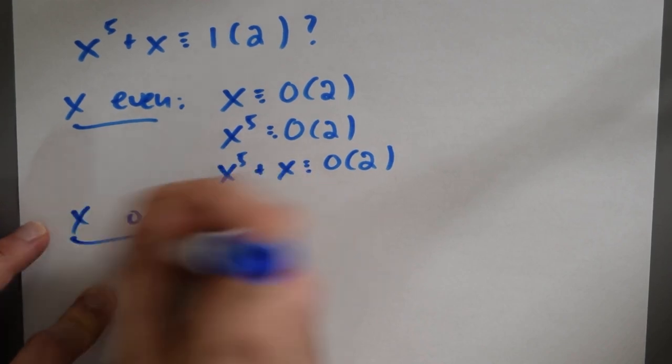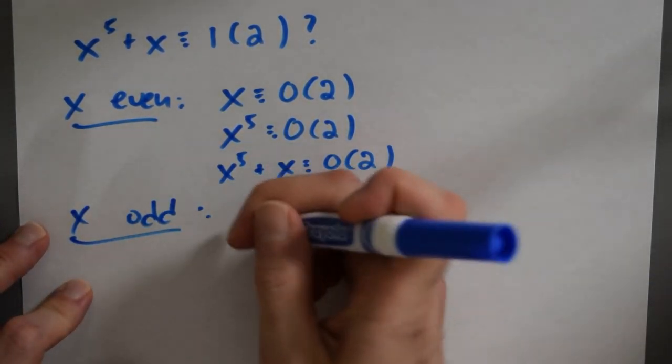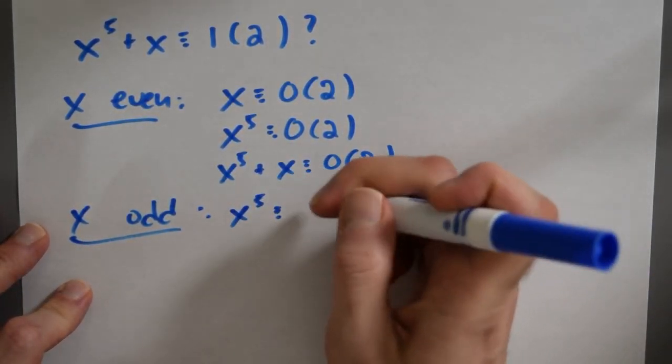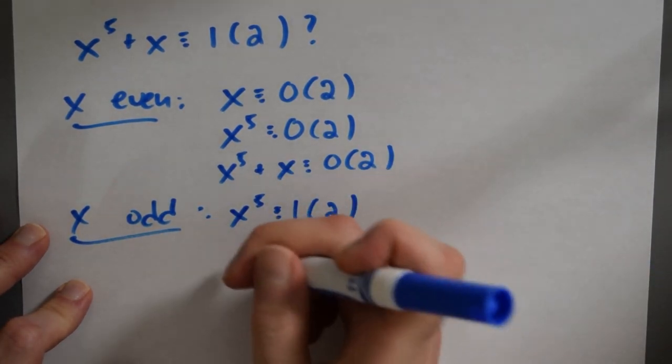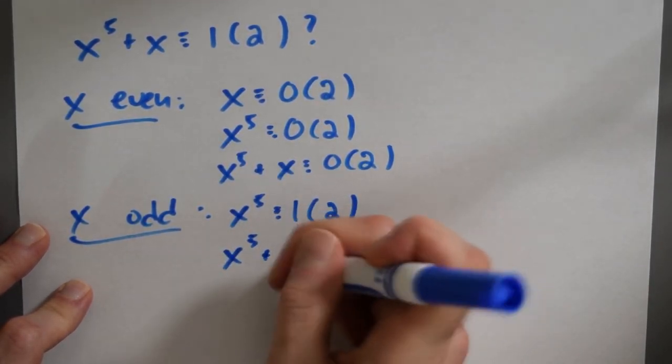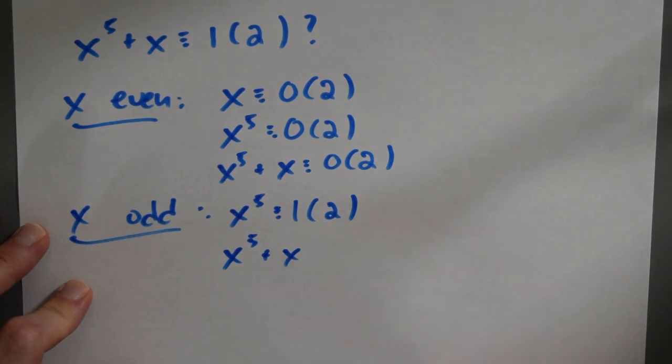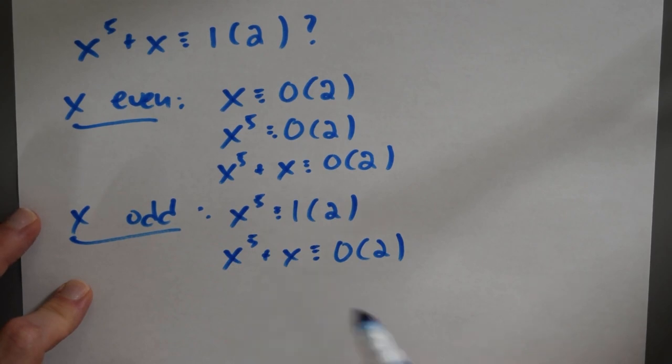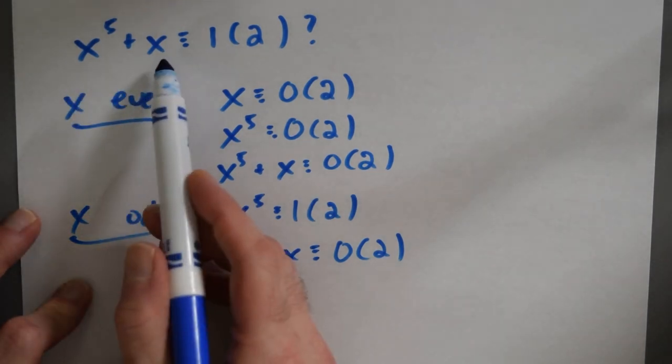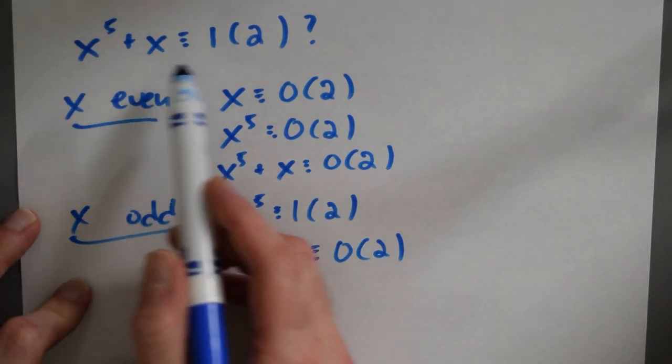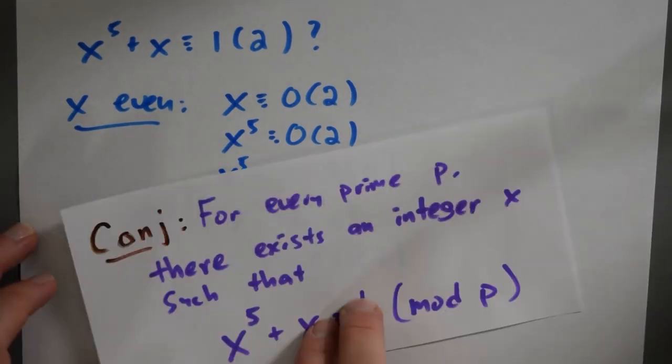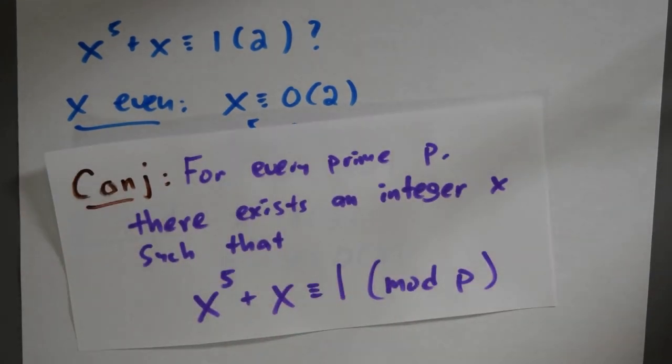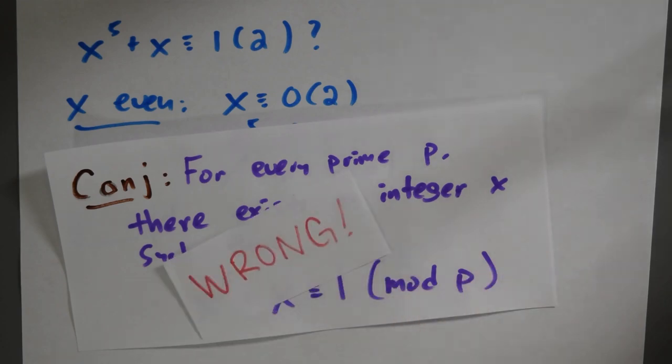Okay. So let's think about the case where X is odd. Well, in this case, X to the fifth is also odd. And then we've got X to the fifth plus X is an odd number plus an odd number, which is necessarily even. So regardless of whether X is even or odd, X to the fifth plus X ends up being even. And that tells us that there isn't an integer with the property that X to the fifth plus X is one modulo two, which means this conjecture that looks so good based on the data that we had is in fact wrong.